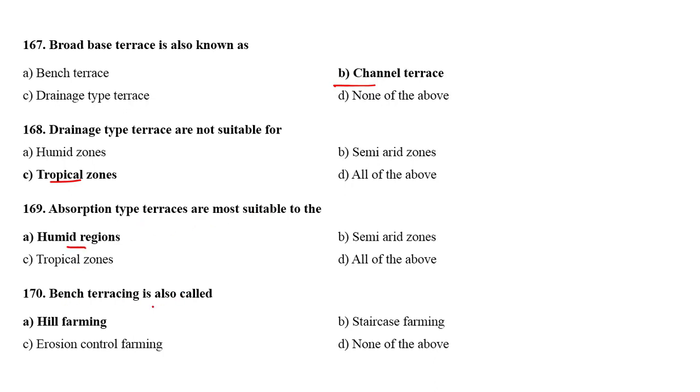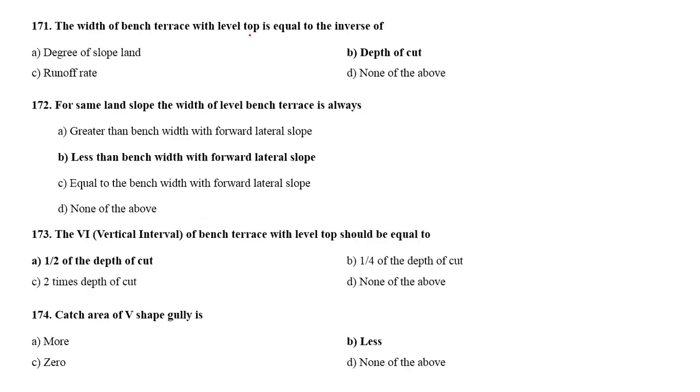Bench terracing is also called hill terracing. The width of bench terrace with the level top is equal to the inverse of depth of cut. For same land slope, the width of level bench terrace is always less than the bench with the forward lateral slope.